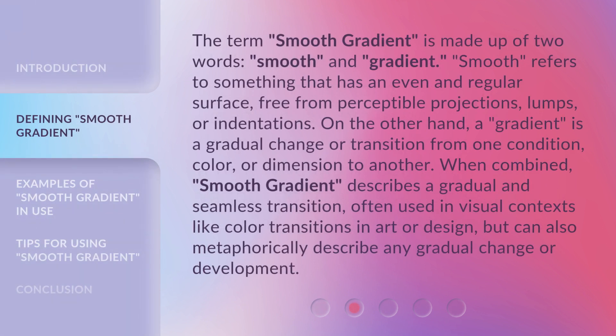The term 'smooth gradient' is made up of two words: smooth and gradient. Smooth refers to something that has an even and regular surface, free from perceptible projections, lumps, or indentations. On the other hand, a gradient is a gradual change or transition from one condition, color, or dimension to another.